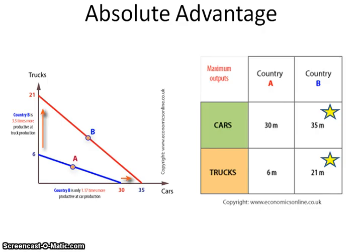In the input method example, you'd see who uses the fewer hours to produce one ton of trucks. So now we've established this is the output method and country B has an absolute advantage in both goods. Just because country B has an absolute advantage in both does not mean they should not trade with country A — you need to look at comparative advantage to make that decision.